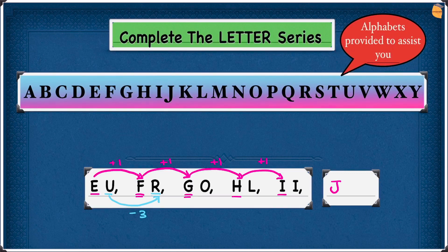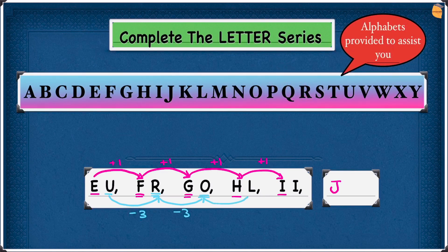Now R to O. Looking at the alphabet, R is here and O is here — 1, 2, 3 steps backwards, so that's also minus 3. Write minus 3. O to L: looking at the alphabet, O is here and L is here — 1, 2, 3 — minus 3 steps. So that's going to be minus 3.